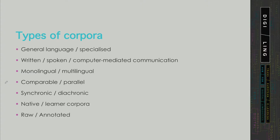Whereas in parallel corpora, we have translations — one or more translations of the same text — which also means that parallel corpora can be aligned. In terms of time or the timeframe, we divide corpora into synchronic, containing texts from a short period of time or contemporary texts, and diachronic, which are built in order to observe language change.